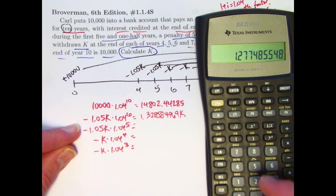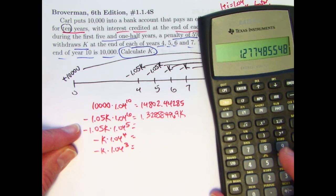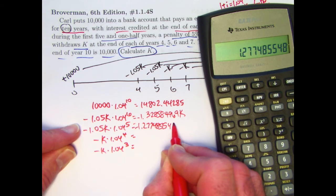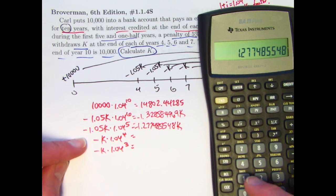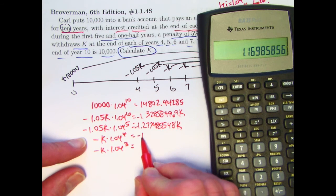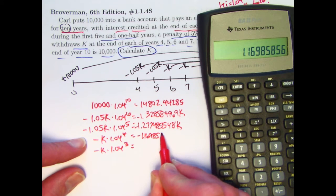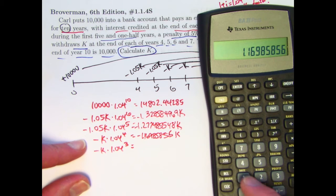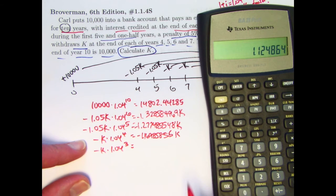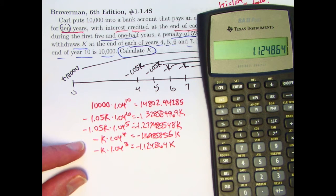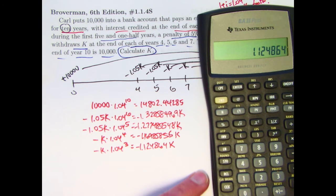Let's see. 1.04 to the fifth power times 1.05. I'm going to store that in register two, STO two. All right, I will also write it down with a minus sign here. Minus 1.277485548K. 1.04 to the fourth power. There's no penalty for that one. I can just write that down and store it in register three. Let's see, 5.856. I will store that in register three. All right, one more to go here. 1.04 to the third power. Negative 1.124864.